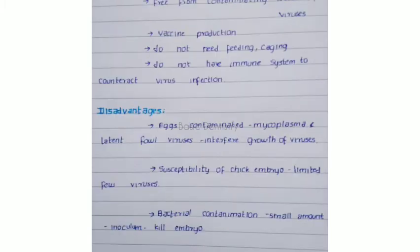This technique does not need feeding and caging of the chicks, and chicks do not have an immune system to counteract virus infection. The disadvantages are that the eggs may be contaminated with mycoplasma and latent fowl viruses that interfere with viral growth. The susceptibility of chick embryo is limited to only a few viruses, and bacterial contamination in even a small amount in the inoculum may kill the embryo and prevent viral replication.